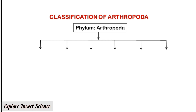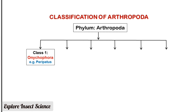Sensory organs include antennae, sensory hairs, and simple and compound eyes. The classification of Arthropoda includes six classes. The first class is Onychophora, with an example being Peripatus. The second class is Arachnida, with an example being the scorpion.